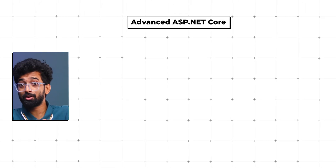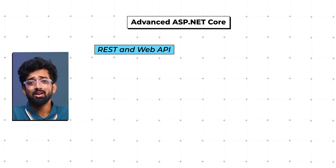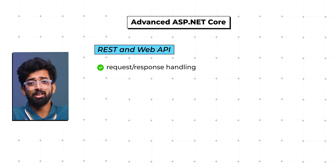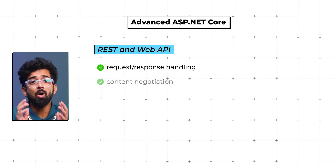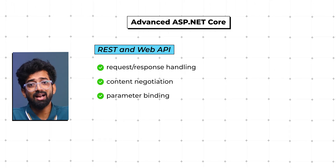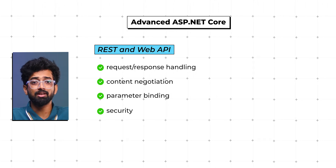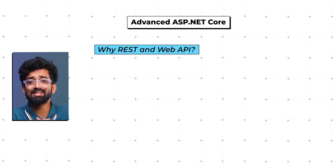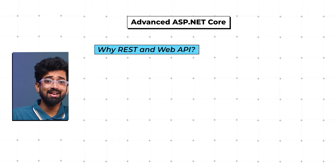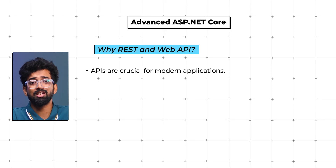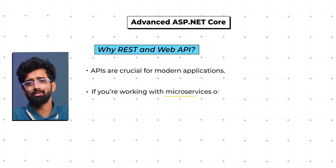For advanced web development, focus on RESTful APIs and web services. You'll learn about request/response handling, content negotiation, parameter binding, and security. Mastering this will help you build scalable and secure APIs for your applications. APIs are crucial for modern applications, especially if you're working with microservices or integrating with other systems.